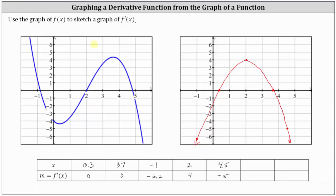On the left we have a cubic function, which is the graph of f of x. On the right we have the graph of f prime of x, which we should recognize as a parabola or quadratic function. Notice that where the original function f of x is decreasing over those intervals, the derivative function values are negative. And where the original function is increasing, the derivative function values are positive. Also notice at x equals 0.3, where the derivative function changes from negative to positive, the original function has a relative minimum. And at x equals 3.7, where the derivative changes from positive to negative, the original function has a relative maximum.